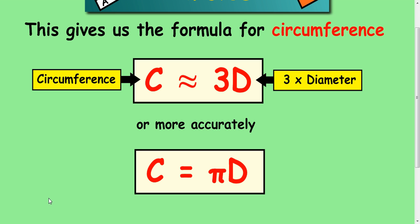Okay, so what this means is we've roughly got a formula for the circumference. Circumference is approximately three times the diameter, but more accurately, circumference is equal to pi times the diameter. 3.14 diameters makes your circumference.